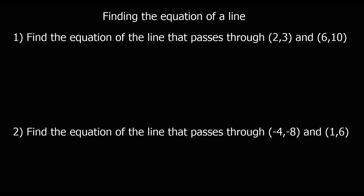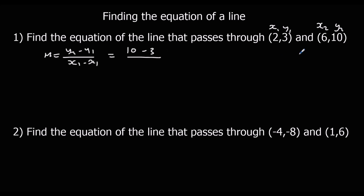Here are two for you to try — pause the video, give them a go, and then I'll go through the answers. For the first one, we find the gradient: y2 minus y1 over x2 minus x1. With x1, y1, x2, y2 we've got 10 minus 3 over 6 minus 2, so that is 7 over 4. That's m, the gradient. So y equals 7 over 4 x plus c.